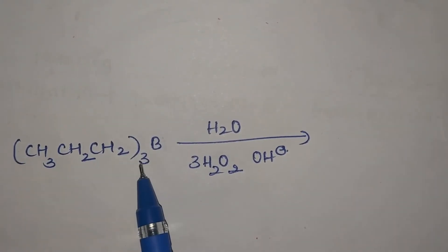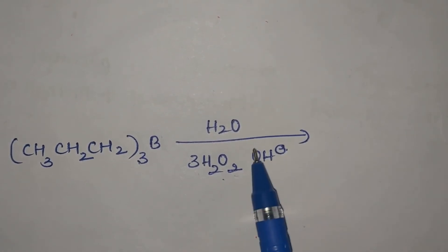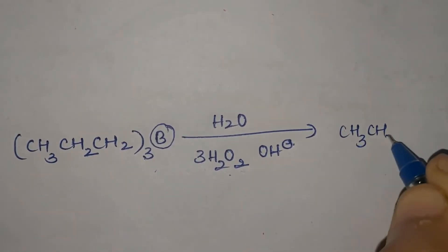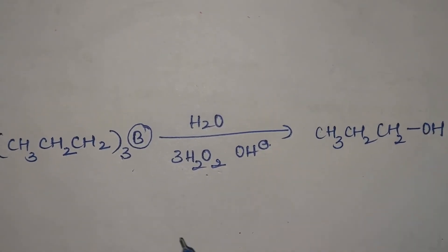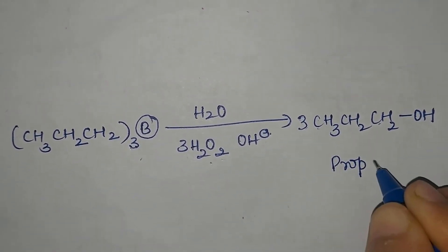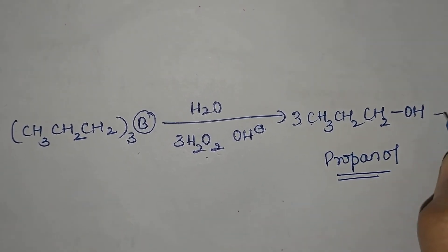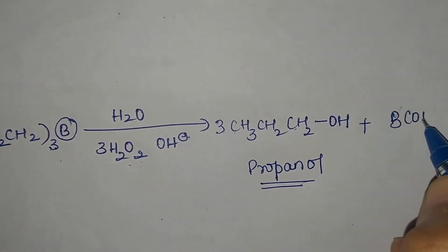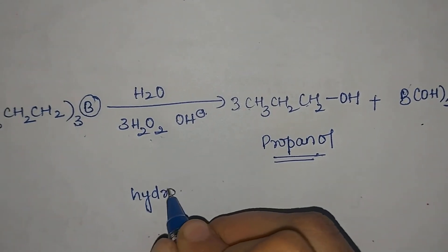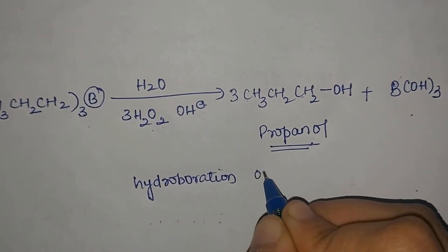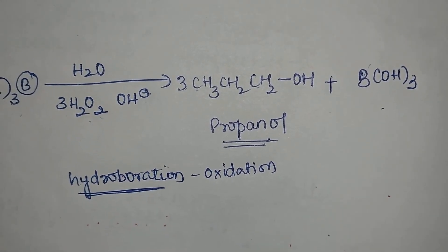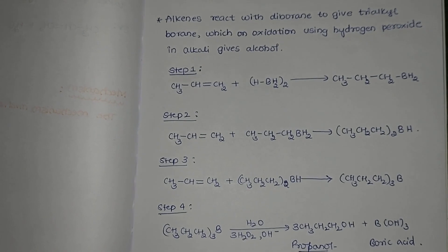When the reaction is carried out with hydrogen peroxide in basic conditions, oxidation takes place and boron is replaced by OH. The product obtained is CH3CH2CH2OH, which is an alcohol. Since there are three alkyl groups, we write it as three CH3CH2CH2OH, and since there are three carbon atoms, the name of the product is propanol. Boron is removed in the form of B(OH)3, that is orthoboric acid. Since we are adding a boron-hydrogen bond we call it hydroboration, and further oxidation by hydrogen peroxide gives the name hydroboration oxidation.